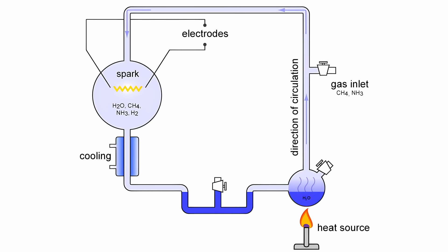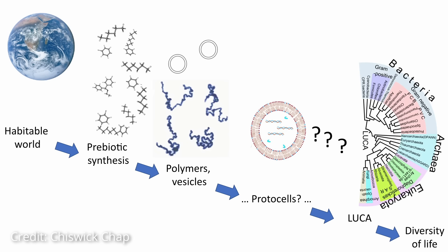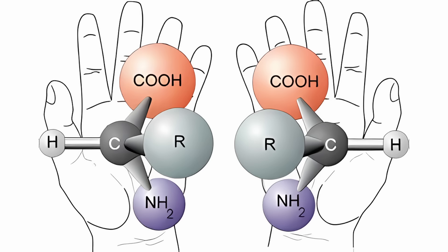The duration of the experiment: The Miller-Urey experiment produced amino acids and other organic compounds in a matter of days, which led some critics to suggest that the experiment was too short to be a realistic representation of the timescales involved in the origin of life. While the experiment demonstrated the formation of amino acids which are essential for life, it did not replicate the entire process of life's origin. The transition from simple organic molecules to self-replicating complex life forms remains a complex and unanswered question in science.